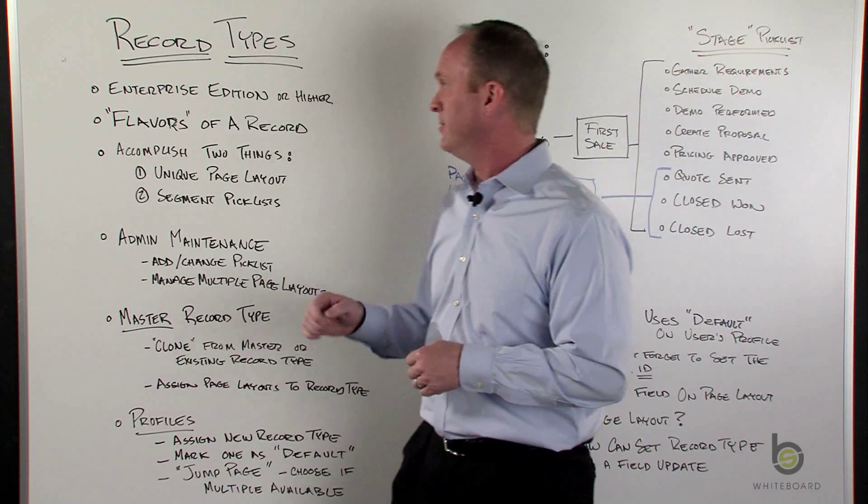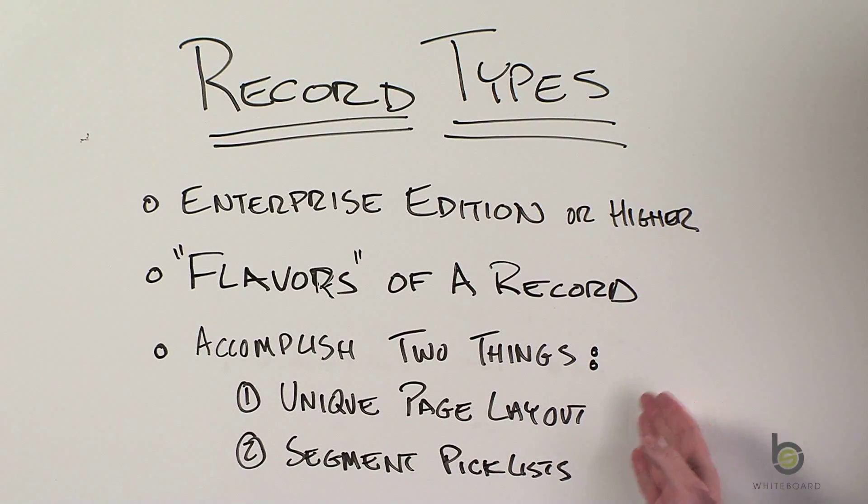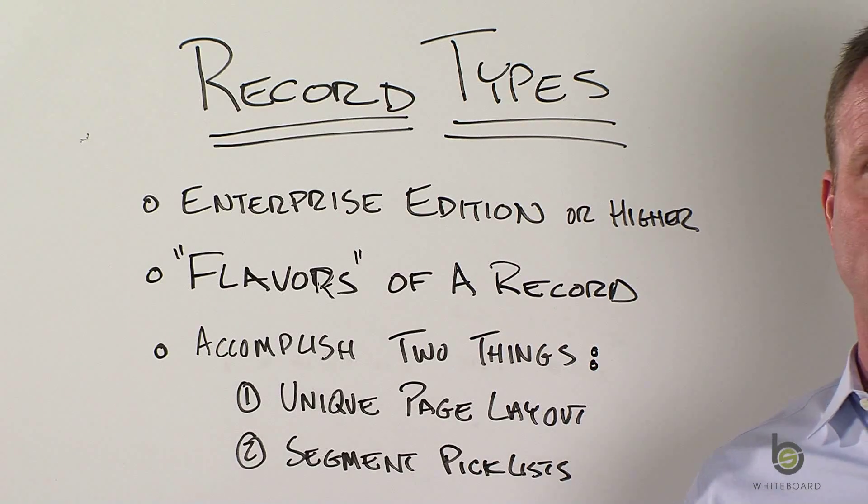So let's talk a little bit more about them. So I talked about record types being a flavor of a record. And when I mean a flavor of a record, we're really talking about the ability to do two things with a record type.